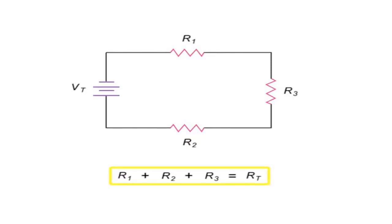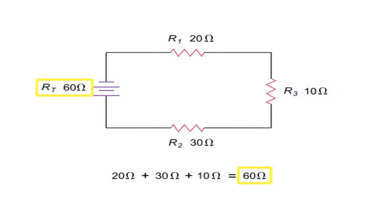So, if R1 has a resistance of 20 ohms, R2 a resistance of 30 ohms, and R3 a resistance of 10 ohms, the total resistance of the circuit is 60 ohms.